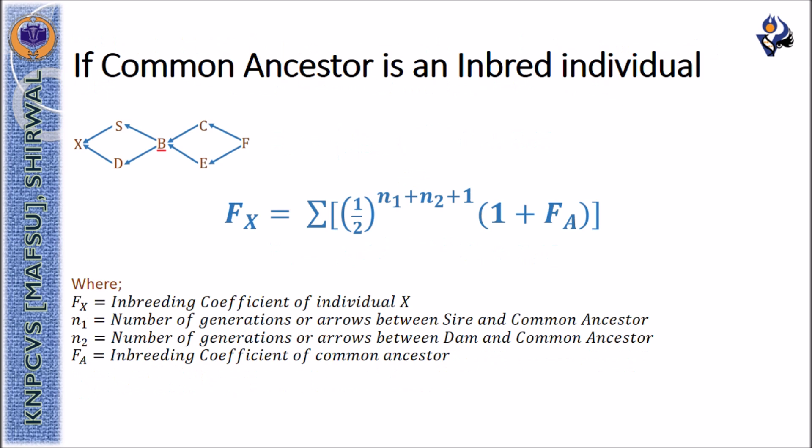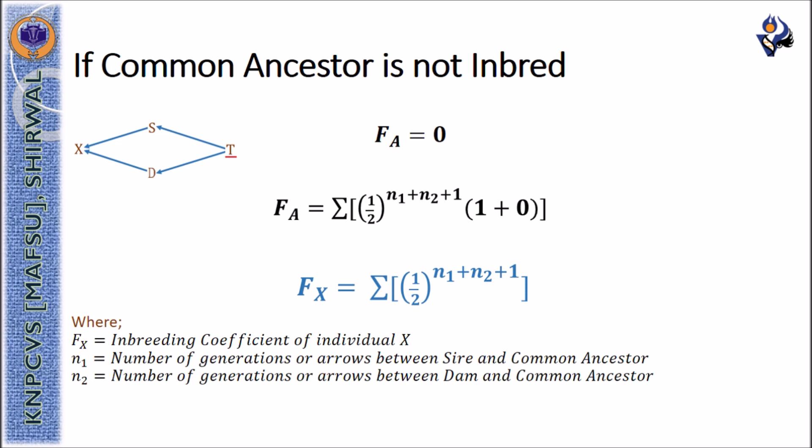Regarding the formula proposed by Wright: if the common ancestor is itself an inbred individual, as shown in the given pedigree where individual B is the common ancestor of individual X and is itself inbred, then the complete formula must be used. However, if the common ancestor is not inbred — as in the pedigree of Raja where T is the common ancestor but is not inbred — the formula reduces to the summation of (1/2) raised to n1 plus n2 plus 1, because FA, the inbreeding coefficient of the common ancestor, is taken as 0.